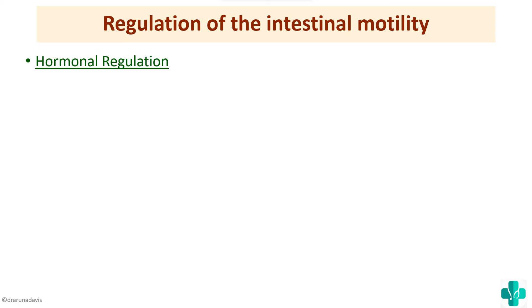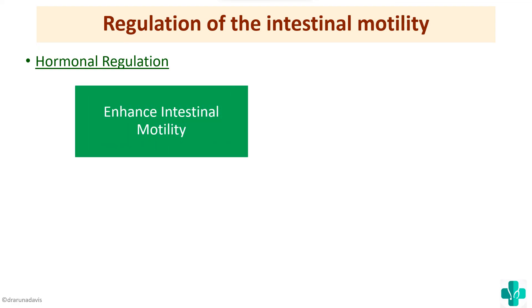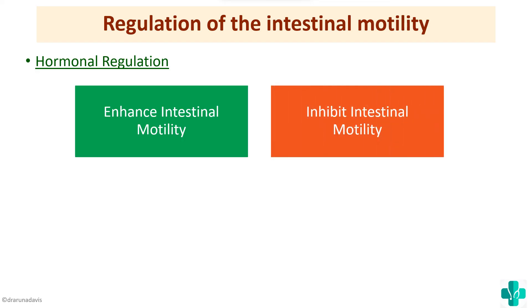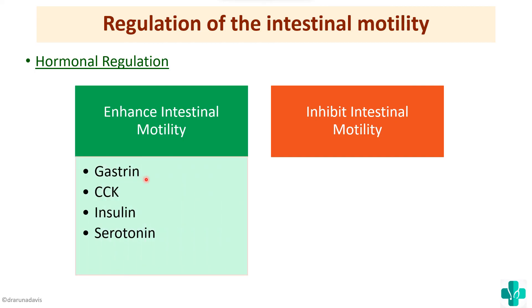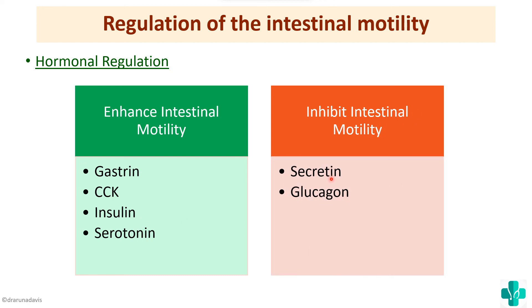For hormonal regulation, there are hormones that enhance intestinal motility and those that inhibit it. Hormones that enhance intestinal motility include gastrin, cholecystokinin, insulin, and serotonin. Hormones that inhibit intestinal motility include secretin and glucagon. That completes the regulation of intestinal motility.